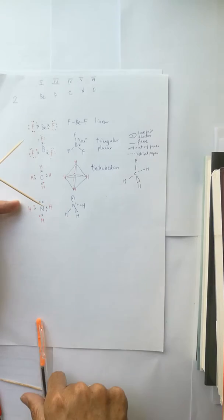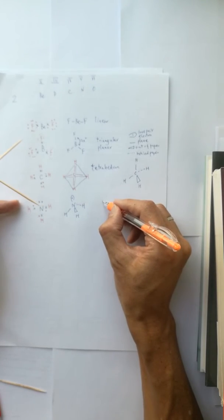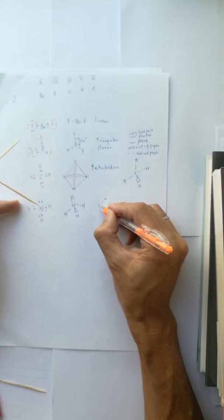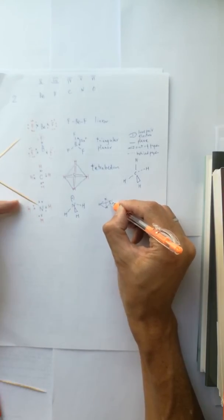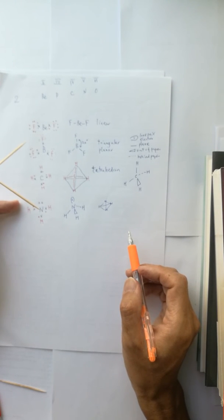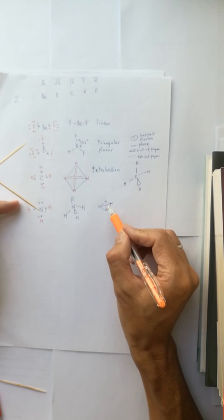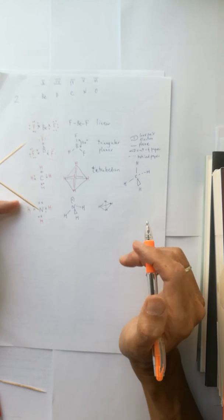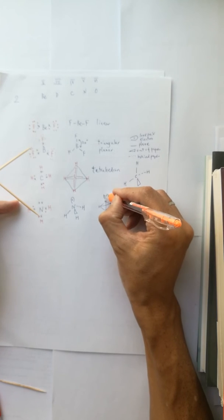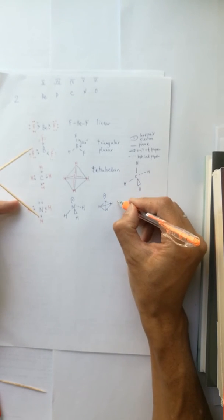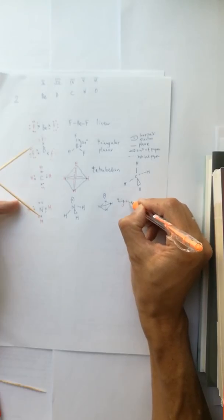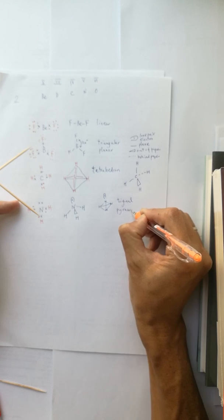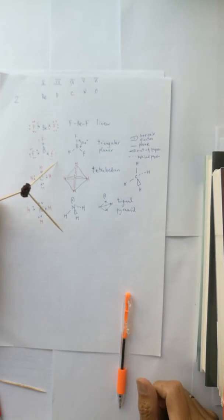It's just like a pyramid, but the four triangles are not equal to each other in this case, which is a trigonal pyramidal.